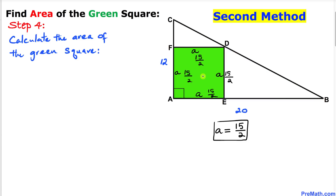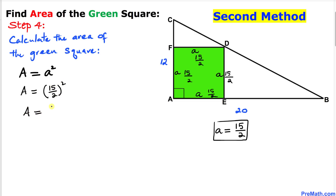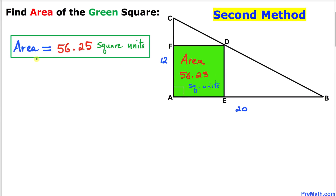Now for the final step: the area equals a squared, where a equals 15 divided by 2. So area equals (15/2) squared, which gives 225 divided by 4. In decimal form, the area of this green square is 56.25 square units.